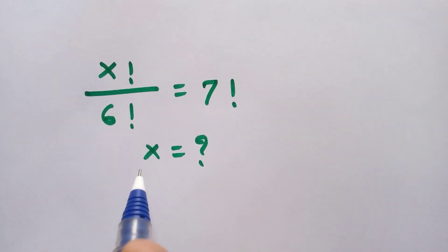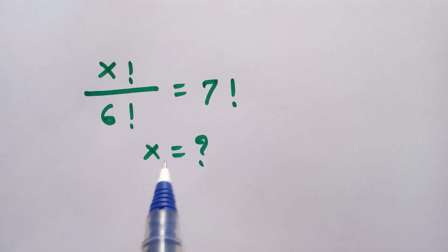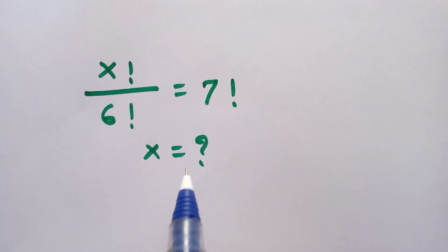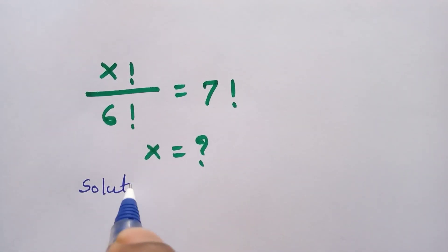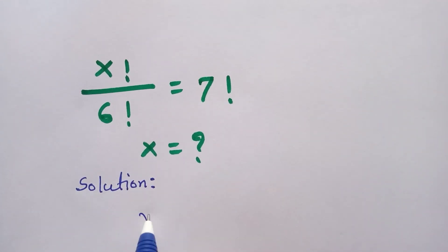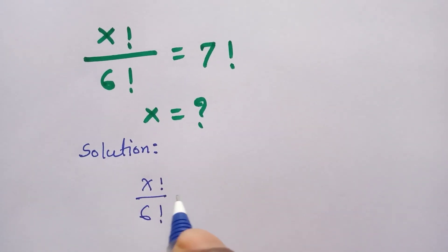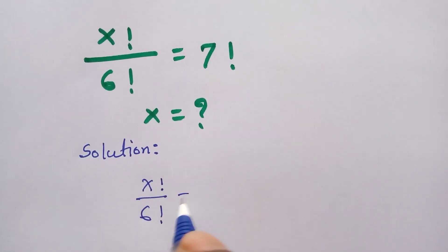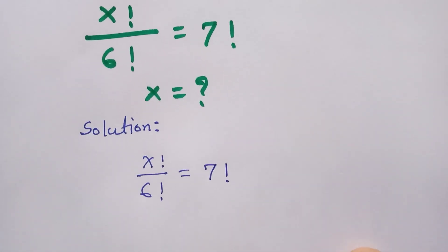Hi everyone, welcome. In this video I am going to show how to find the value of x. Our question is: x factorial divided by 6 factorial is equal to 7 factorial.